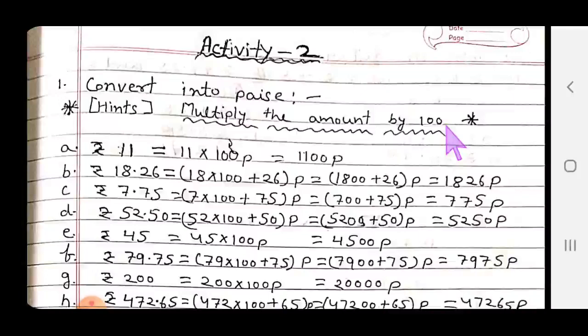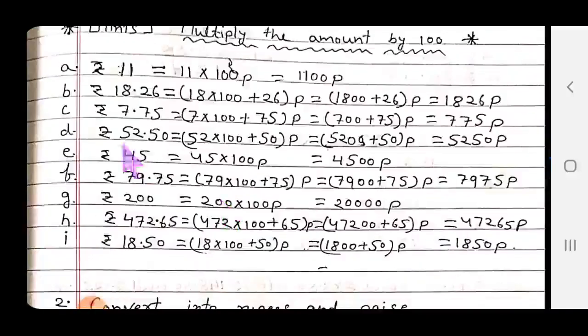Question number 1: 11 rupees. Multiply 11 by 100 paise, you get 1100 paise. Question b: 18 rupees 26 paise. Multiply 18 rupees by 100, then add 26 paise. 18 times 100 equals 1800 plus 26 equals 1826 paise.